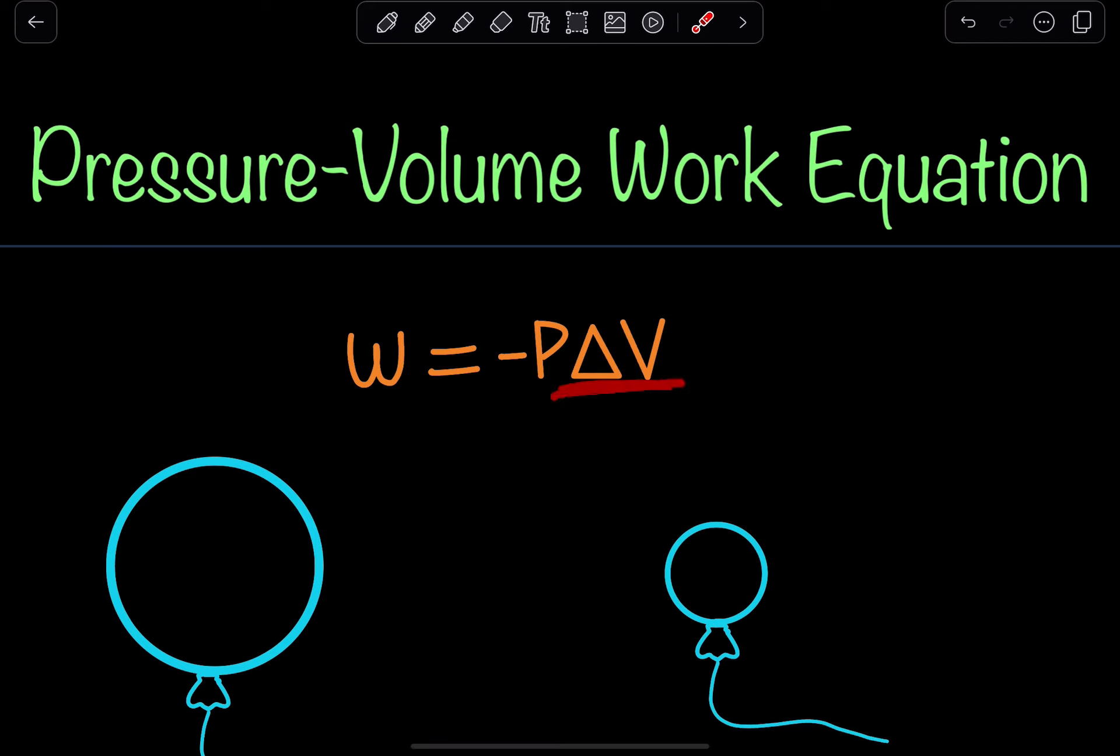Now, this delta V represents the change in volume. So that's going to be V final minus V initial. And that's going to play an important role in just a second.